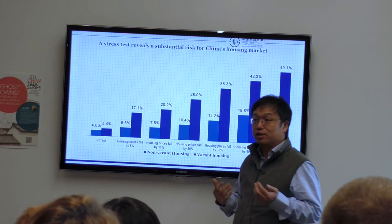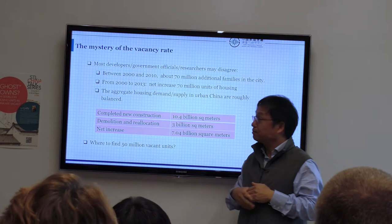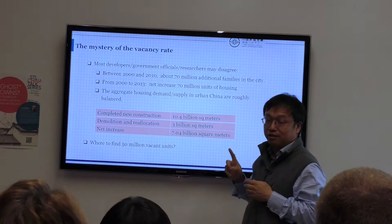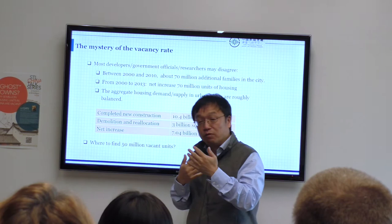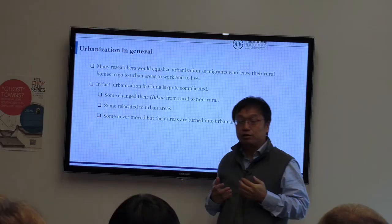This puts quite a bit of pressure on the market. Between 2000 and 2010, 70 million additional families moved into cities according to the census — no controversy on that. From 2000 to 2013 there was a net increase of 70 million units of housing. So you could have 50 million vacant houses with 70 million incremental families and 70 million incremental houses.